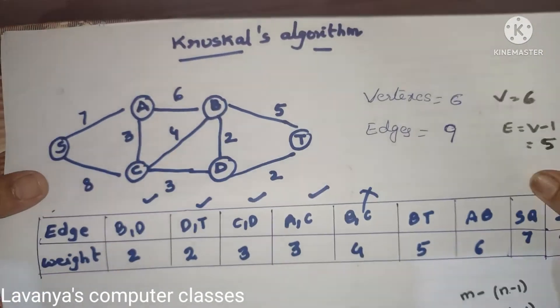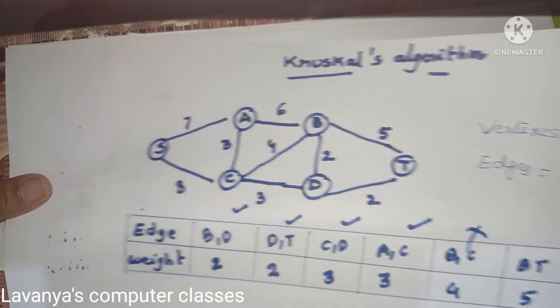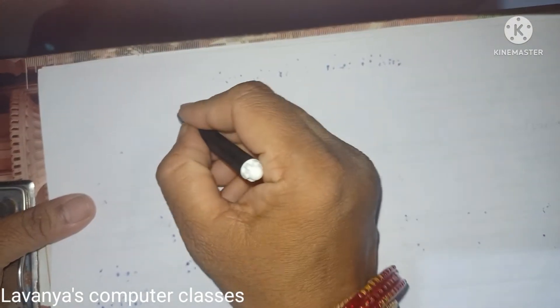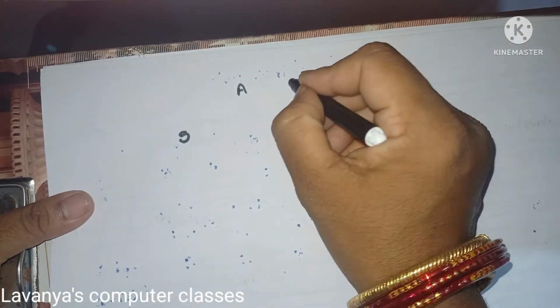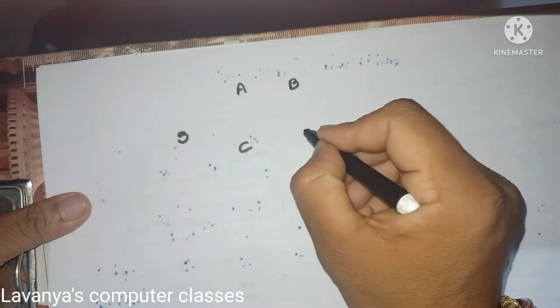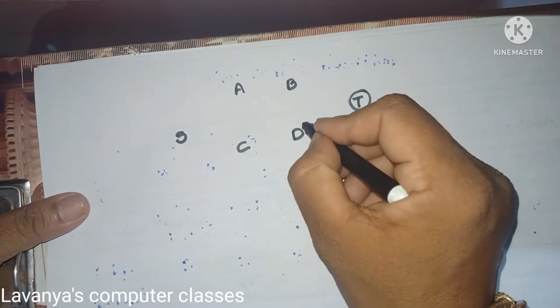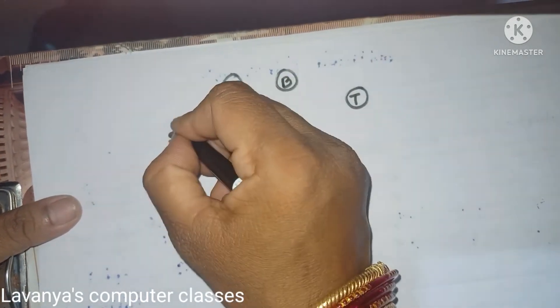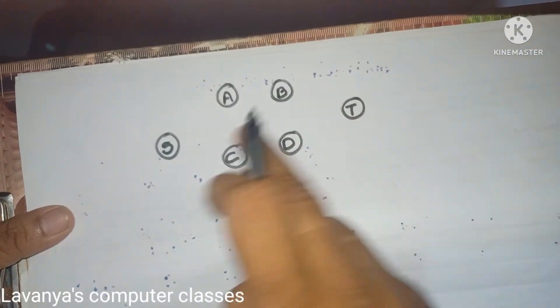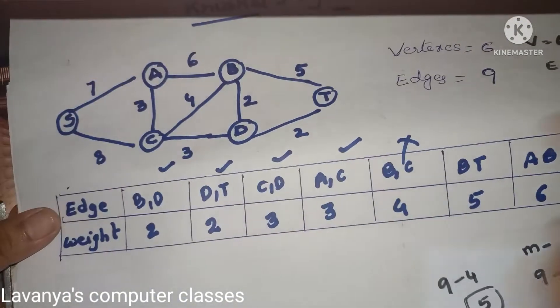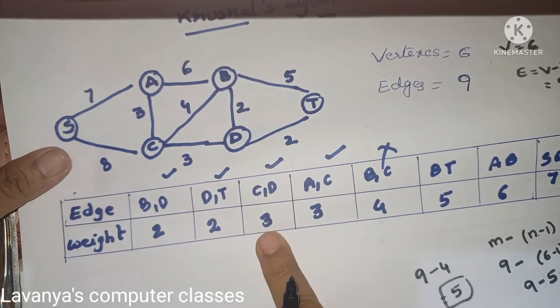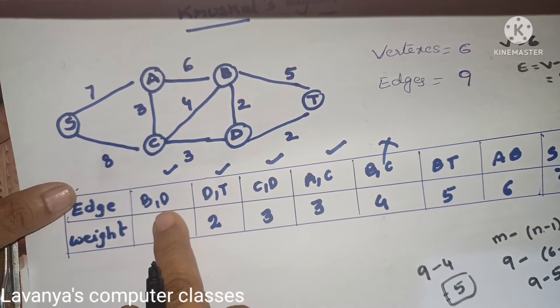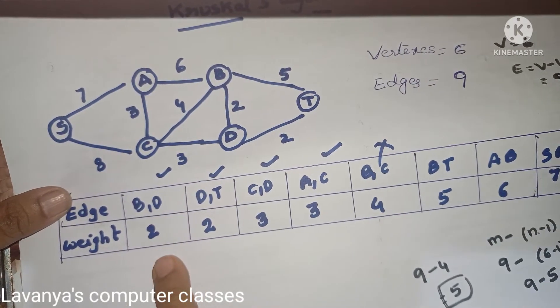First we prepare the table, then draw the spanning tree with minimum weights. Place all 6 vertices in the same positions: S, A, B, C, D, and T — without changing positions. Now check the table and select the minimum edge. From the table already sorted, select the first edge: B–D with minimum weight 2.